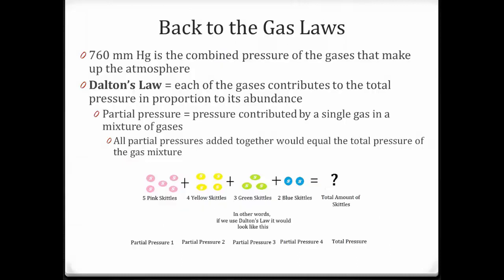To do this, we've got to look at the gas laws. One of those gas laws is Dalton's law. Air has a mixture of gases in it, so that 760 millimeters of mercury reflects the pressure of all the gases together. What Dalton's law says is that each gas contributes to the total pressure in proportion to its abundance. So we can think of each gas having a partial pressure — the pressure contributed by a single gas in a mixture of gases.